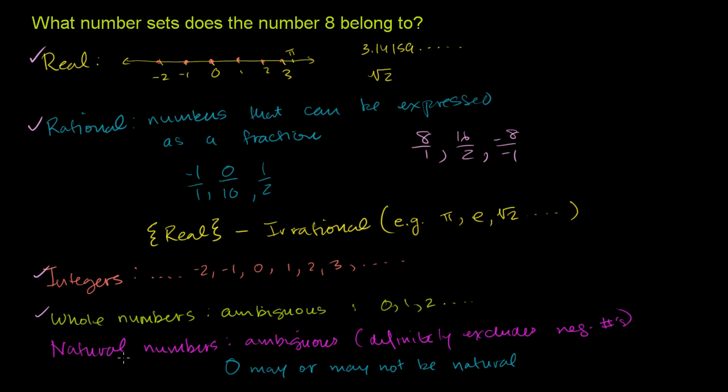And it's unambiguously a natural number. If I go out and count trees, I can count 8 trees. So it is a positive, you know, if the number was 0, I'd be like, well, depending on who you talk to, it might be a natural number. But 8 definitely is a natural number. So it's a part of all of these number sets.